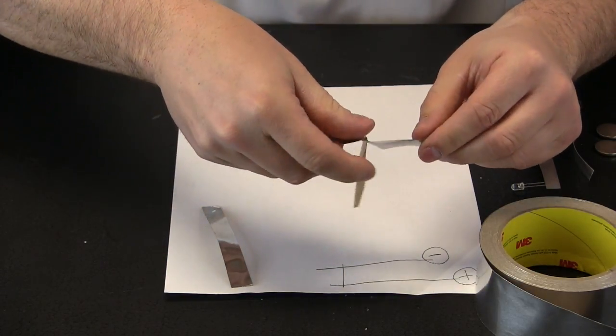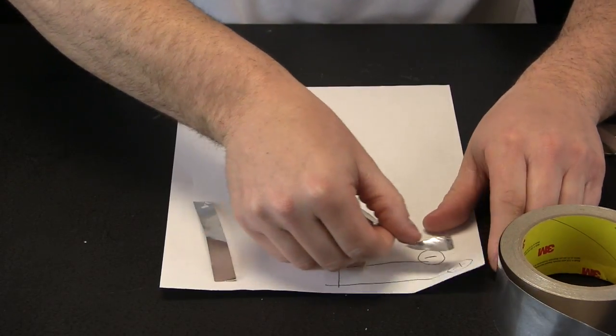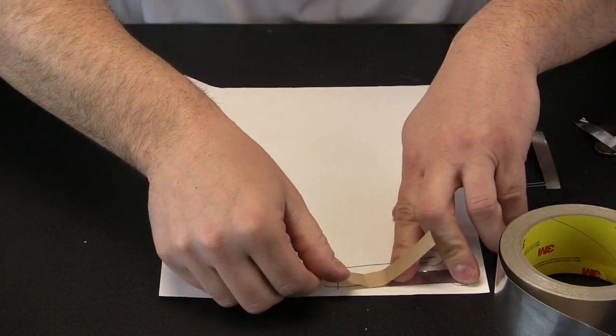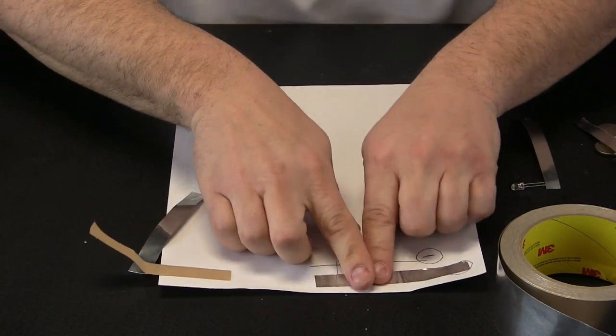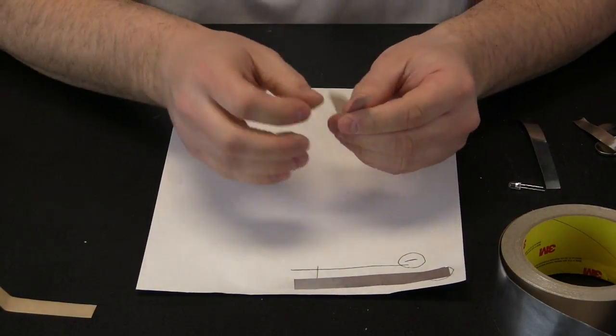That side of the foil tape is sticky so you want to be careful. Make sure I am going to go right into the center of my circle. So I know it is going to contact that battery. Now all I do is smooth out the tape. That is one leg. Let us do the other leg.